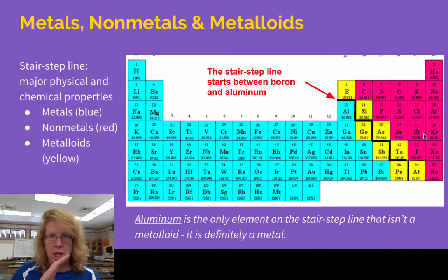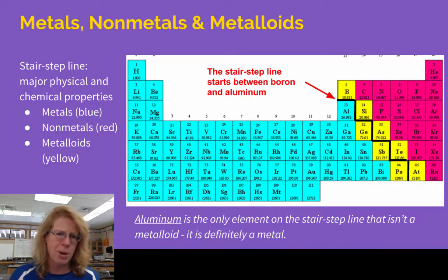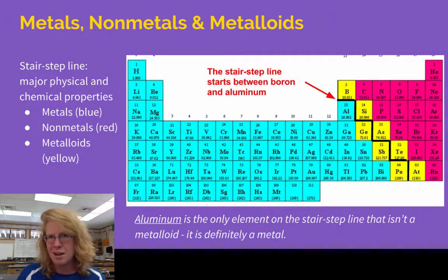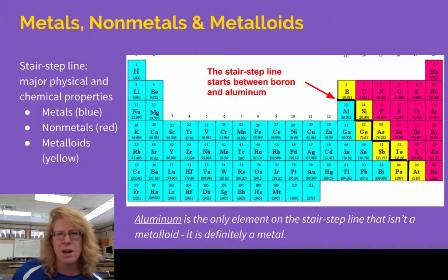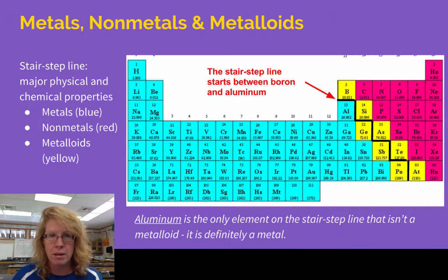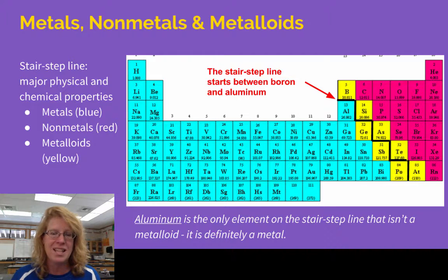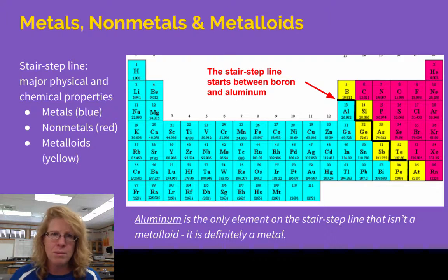Slithering right along that stair-step line is the group known as metalloids, and metalloids are weird — they've got characteristics of both metals and non-metals. They're sort of malleable, sort of bendy, but not entirely. They might be kind of shiny, but not as shiny as a metal. We don't deal with metalloids a lot in Chem 1; you just need to know where they are. The one to be careful with is aluminum — it touches the stair-step line but is definitely a metal, not a metalloid.